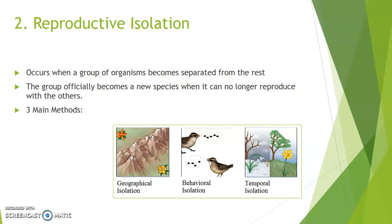Reproductive isolation is when species lose the ability to reproduce with one another. That's fundamental because it was a key part of our definition of what a species is: a group of organisms that can reproduce and create offspring. If they lose that ability, they're no longer the same species. There are three ways this loss can occur: geographical isolation, behavioral isolation, or temporal isolation.